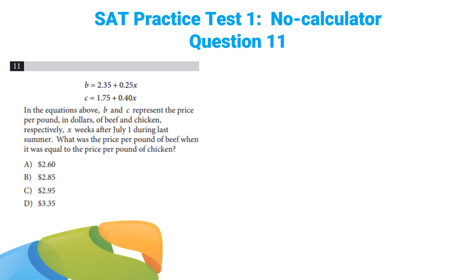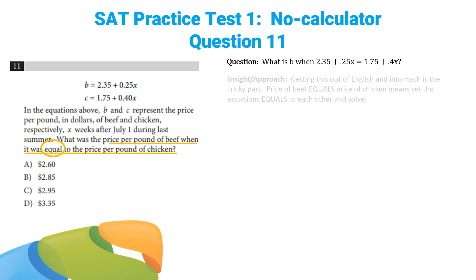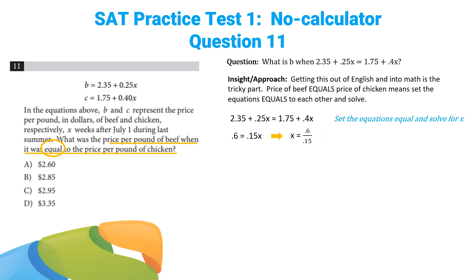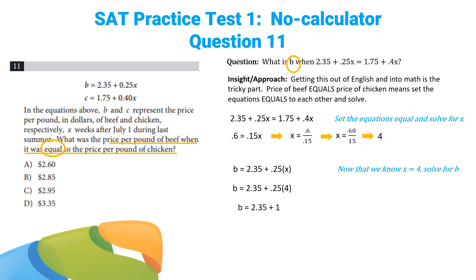Question 11's tricky part is getting the confusing English into a simple math equation. You're being asked what is the price per pound of beef when it equals the price per pound of chicken — in math: what is B when 2.35 plus 0.25x equals 1.75 plus 0.4x? Set the equations equal and solve: x equals 4. But we're being asked for B, not x — always write down what you're asked for. Plug 4 in for x and solve: the answer is 3.35, or D.